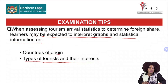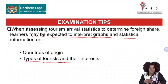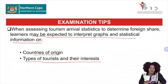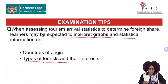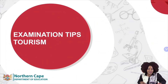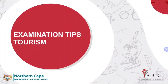Grade 12 learners, you must know the types of tourists that will be interested in attending events like the Commonwealth Games, the Olympic Games, the Comrades Marathon, or Soccer World Cup tournaments. Those are the things you are cautioned about — study them for the upcoming exam. This takes us to the end of our examination tips, and I believe that as we give you these tips, you are taking them seriously because they are going to help you a lot in the exams.